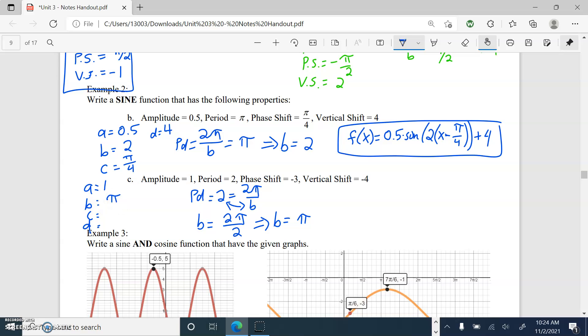Phase shift, negative 3, so c is negative 3. Vertical shift, down 4, negative 4.